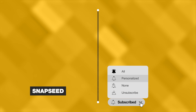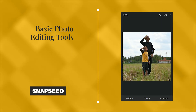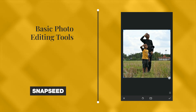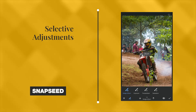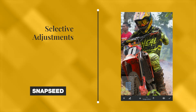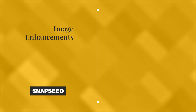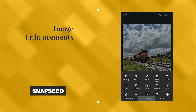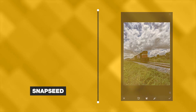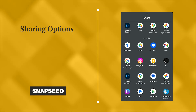Snapseed is a more consumer-focused photo editing app that offers a range of basic and advanced editing tools. Key features include basic photo adjustment tools such as cropping, straightening and basic color adjustments. Snapseed also allows you to make selective adjustments to specific areas of a photo using the Brush tool, and it includes tools for enhancing the overall look of a photo including sharpening and perspective correction. You can also share your edited photos directly to social media platforms or via email or messaging apps.